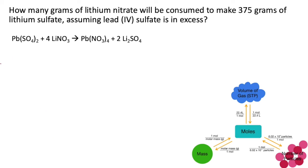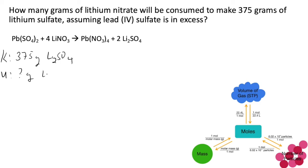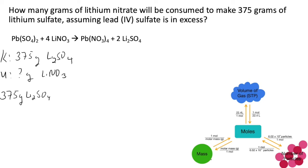In this problem we are asked to calculate how many grams of lithium nitrate will be consumed to make 375 grams of lithium sulfate, assuming lead sulfate is in excess. We start with our known, which is 375 grams of lithium sulfate, and our unknown — what we are looking for — is grams of lithium nitrate.